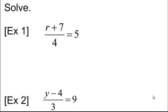So first, here we have a fraction on the left, right? r plus 7 over 4 equals 5. I want to get rid of that divided by 4, because fractions are basically division.